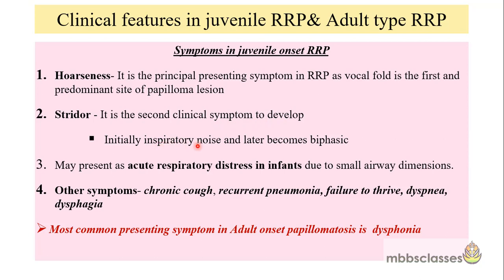Some infants may present with acute respiratory distress because they have small airway dimensions. Other symptoms of juvenile onset RRP may be chronic cough, recurrent pneumonia, failure to thrive, dyspnea, and sometimes dysphagia. On the other hand, the most common presenting symptom in adult onset papillomatosis is dysphonia.